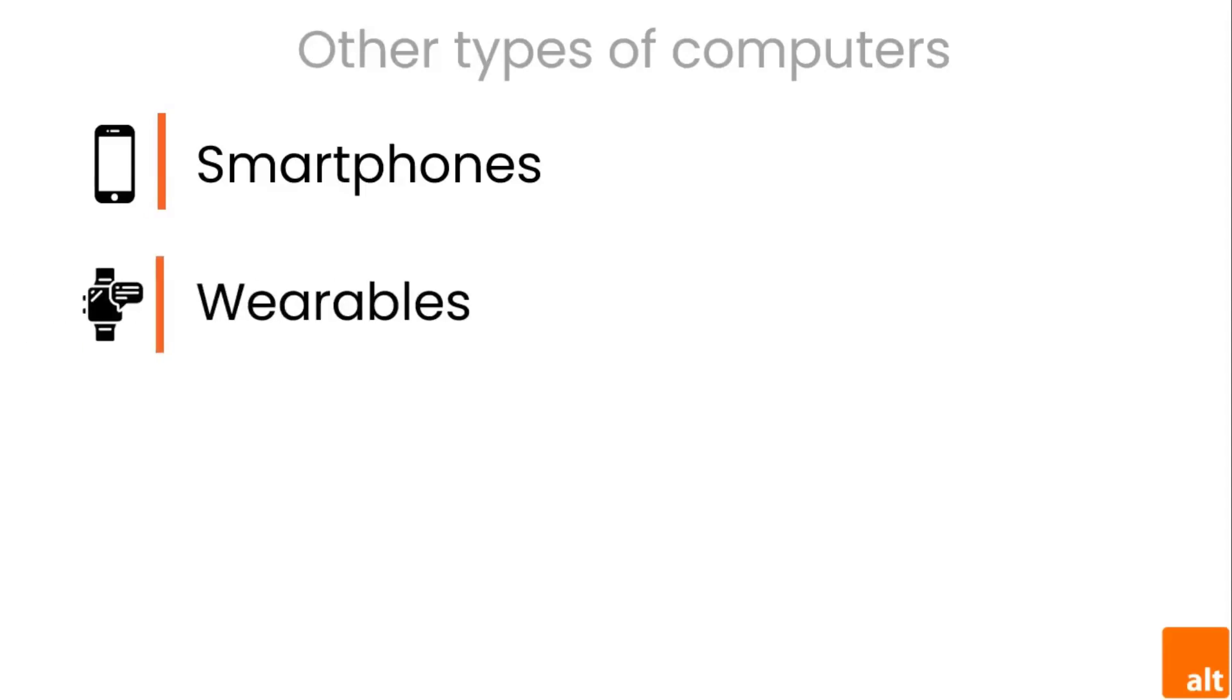Wearable technology is a general term for a group of devices including fitness trackers and smartwatches that are designed to be worn throughout the day. These devices are often called wearables. A game console is a specialized type of computer that is used for playing video games on your TV. And many TVs now include applications or apps that let you access various types of online content. For example, you can stream video from the internet directly onto your TV.